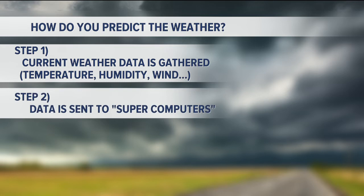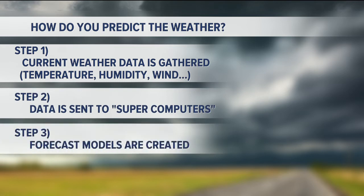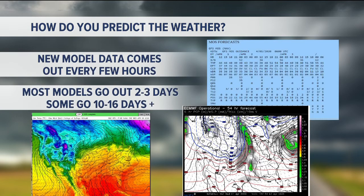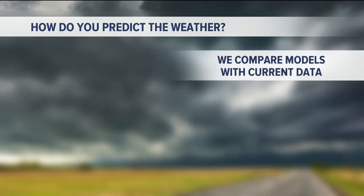All of that data is sent to supercomputers — really fancy, really fast computers that can take all that data and do math really fast. They put together these forecast models, and these are different maps or text data that I can access on my computer. New model data comes in about every few hours. Most of these models go out two to three days, some go out beyond that, but they tend to become less accurate after about three days.